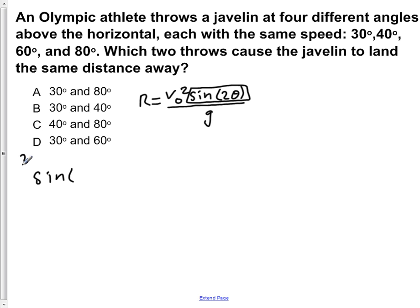So first we're going to do 30 degrees. The sine of 2 times 30 degrees equals the sine of 60 degrees, which is equal to the square root of 3 over 2.